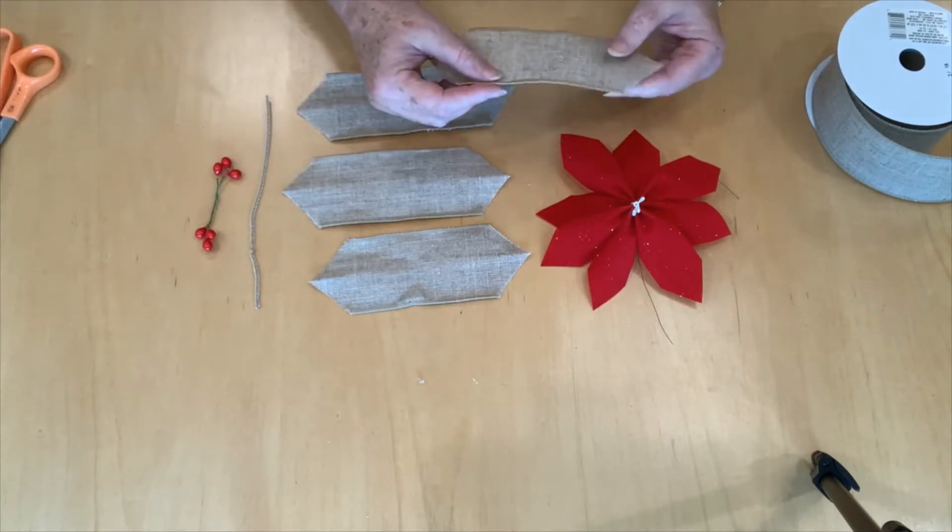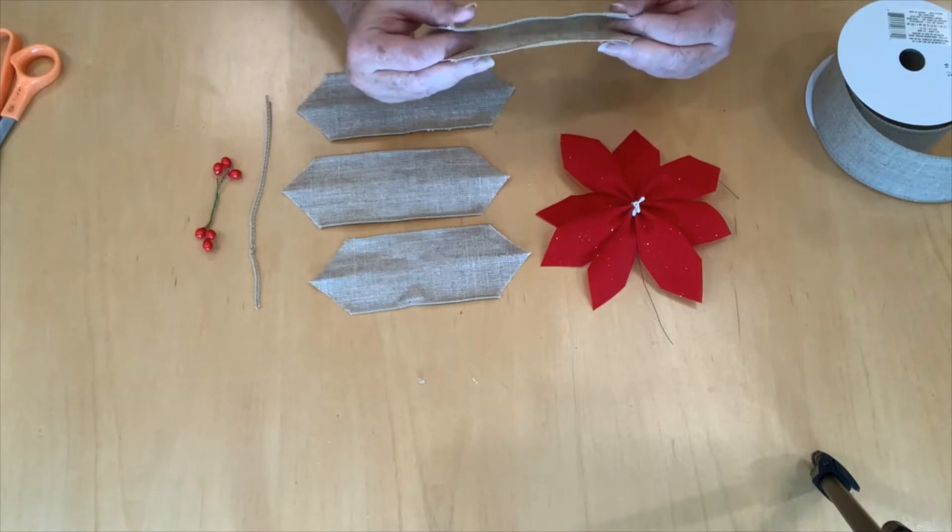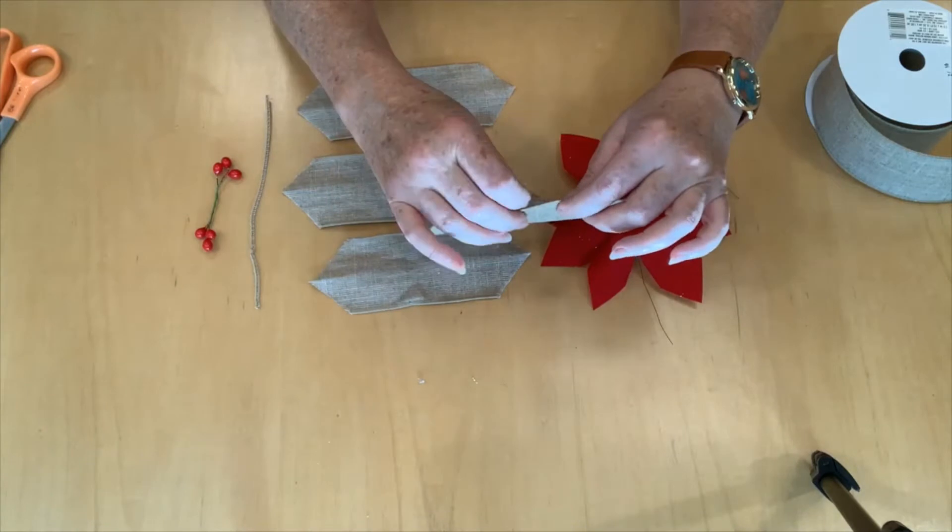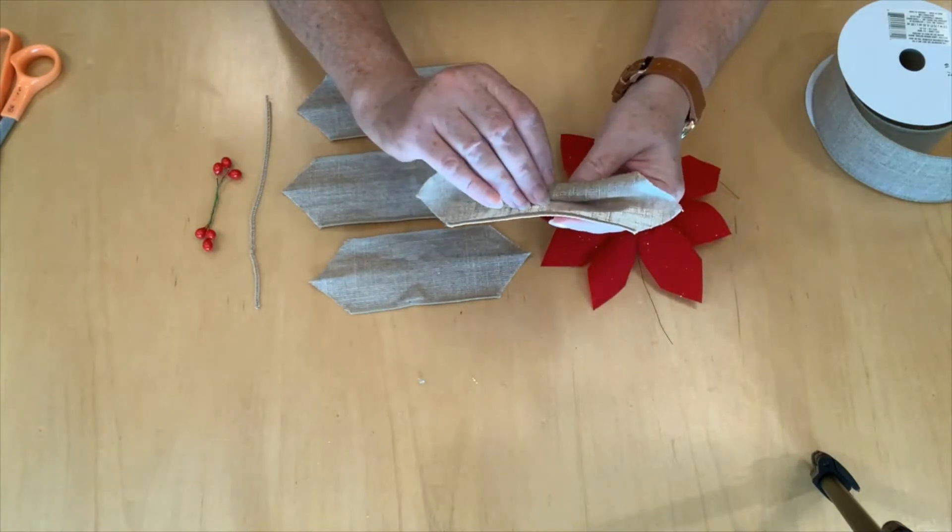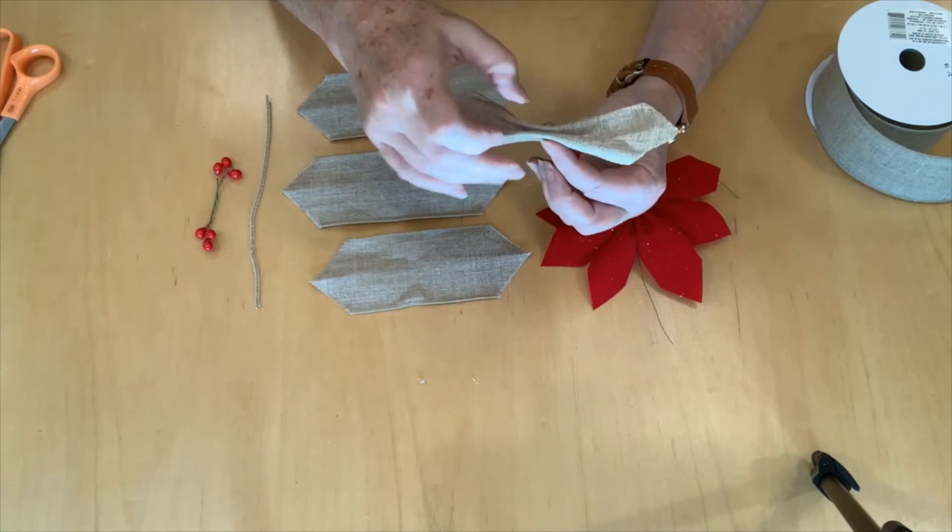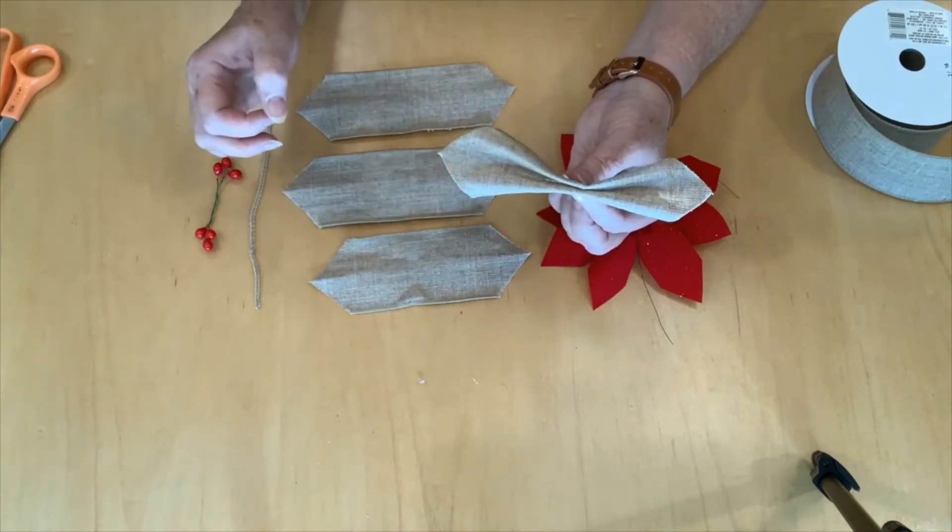Now here's the tricky part and you're going to find it's not very tricky. You're going to take the two long ends fold them together then you're going to fold them again so that your ribbon looks like this.